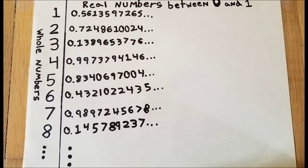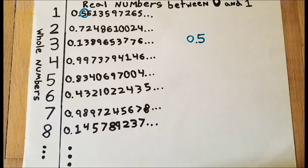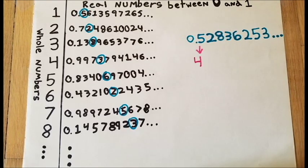But infinity isn't large enough to list all decimals. We can still make new real numbers by taking the first digit of the first number, the second digit of the second number, and so on.